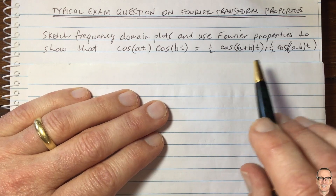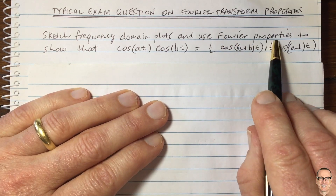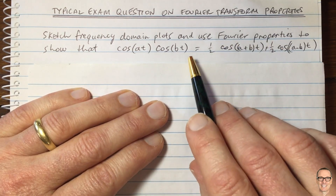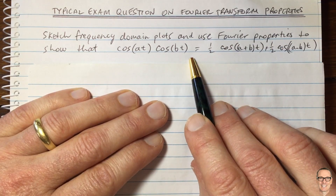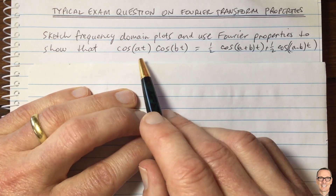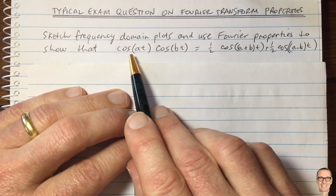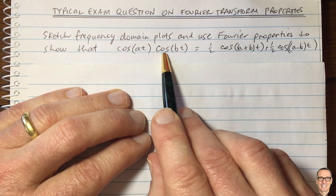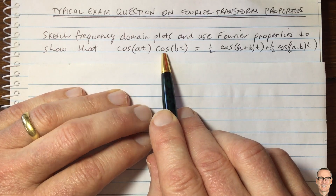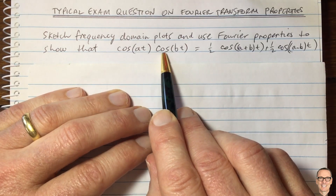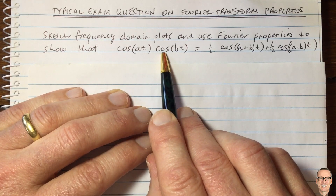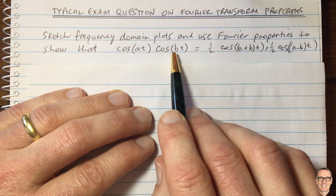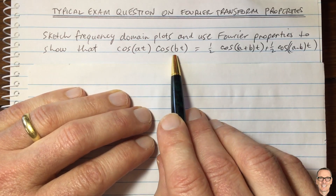Here it's asking us to use Fourier properties, so we're going to be thinking about the frequency domain. One of the properties we know is that if you multiply two functions in the time domain, it's equivalent to convolving their Fourier transforms. So we're probably going to look at convolution here.